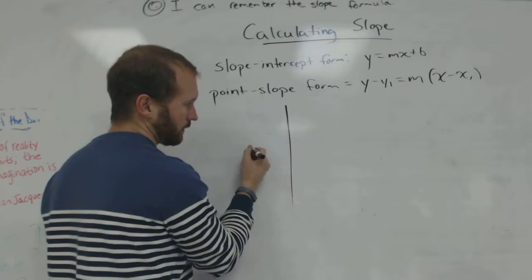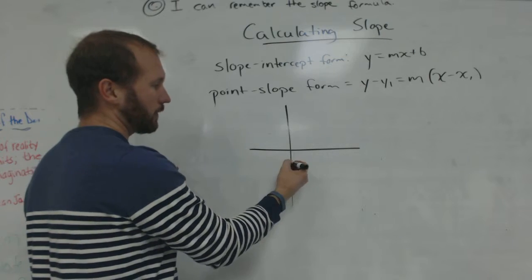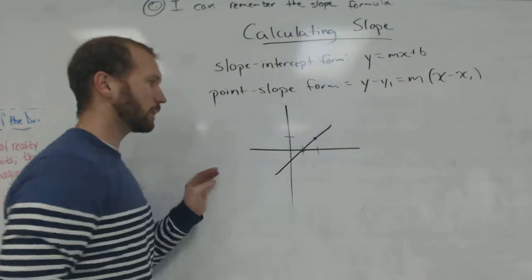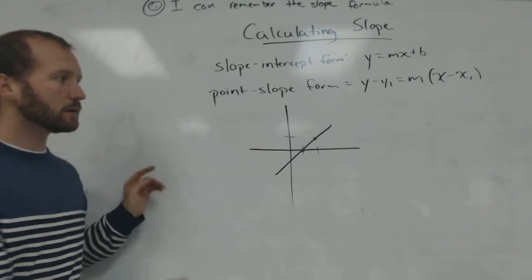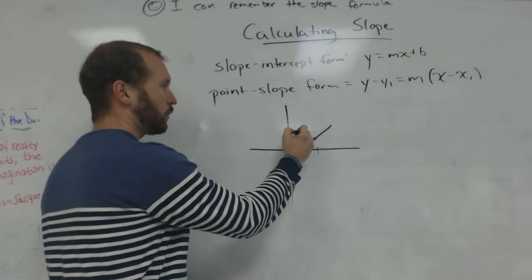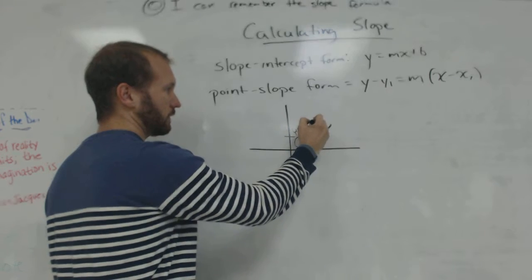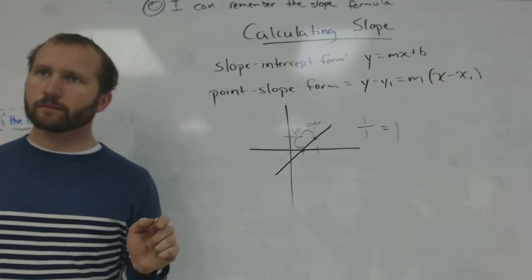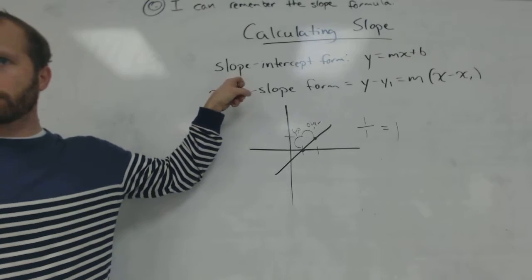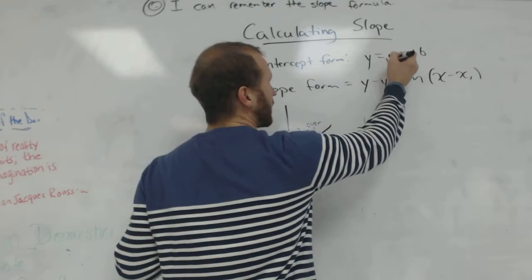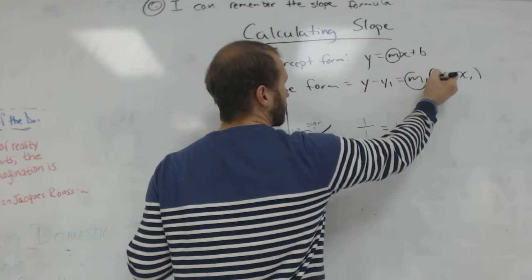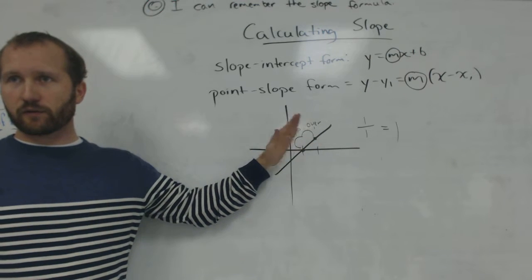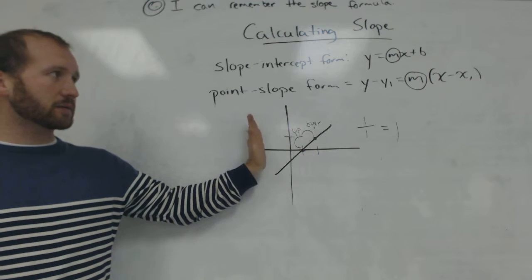y minus y1 equals m times x minus x1. And then, on the homework over the weekend, we practiced finding the slope from a line. So if I have a line with these two points on it, the slope of this is up one, over one, or just one. So we've seen slope before in these three different ways. In these equations, slope is m. The slope is the steepness of a graph. It tells us how steep our graph is going to be.